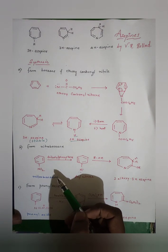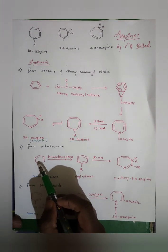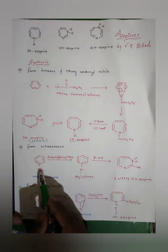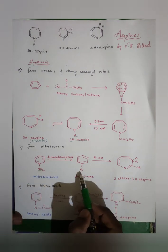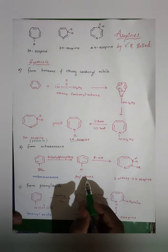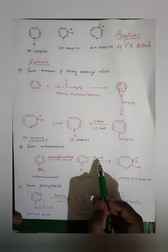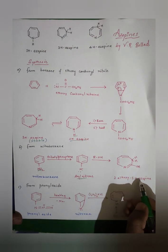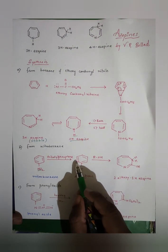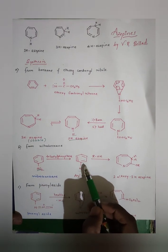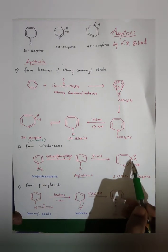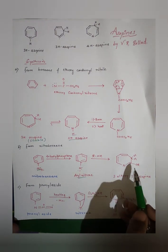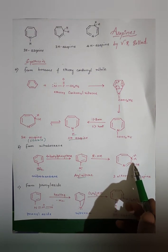The second synthesis is from nitrobenzene. When nitrobenzene is treated with tributylphosphine, an aryl nitrene is formed — the NO₂ group is converted to the nitrene. When this aryl nitrene further reacts with ROH (alcohol), we get 2-alkoxy-3H-azepine. The nitrene undergoes ring insertion forming a seven-membered ring, with an alkoxy group substituted at the second position.